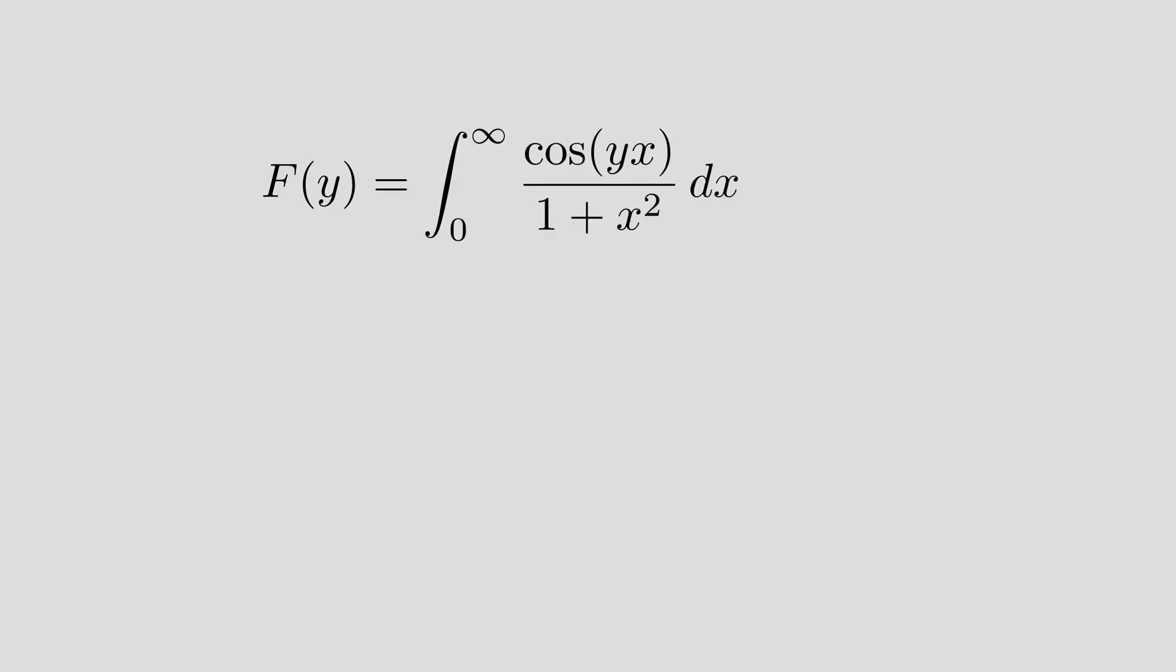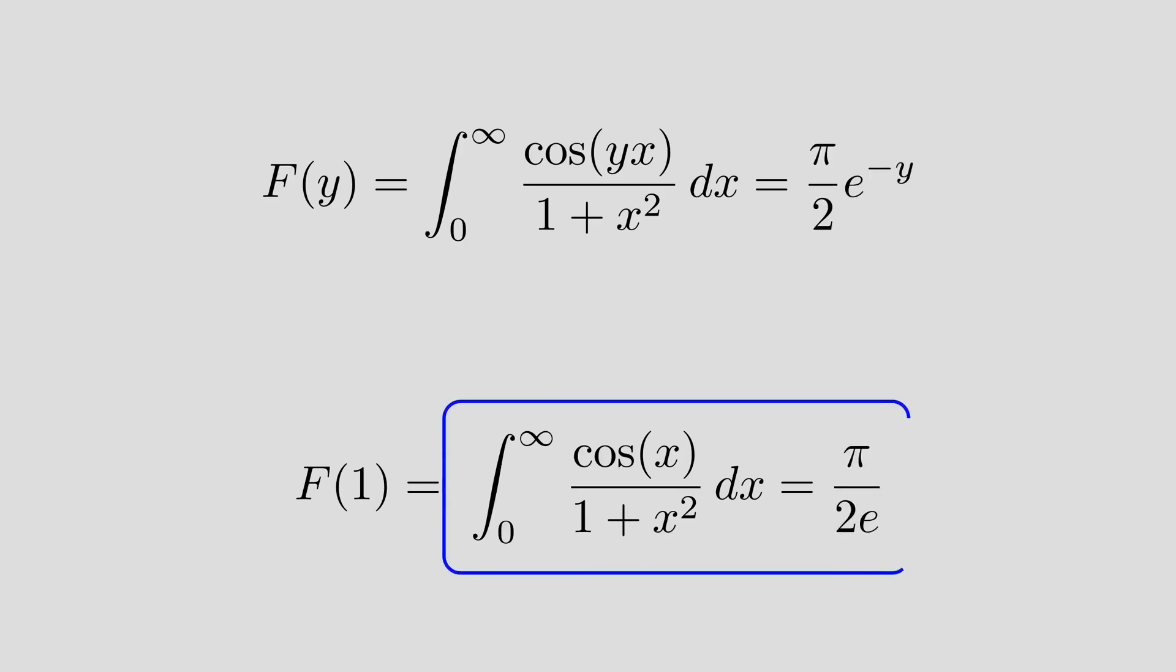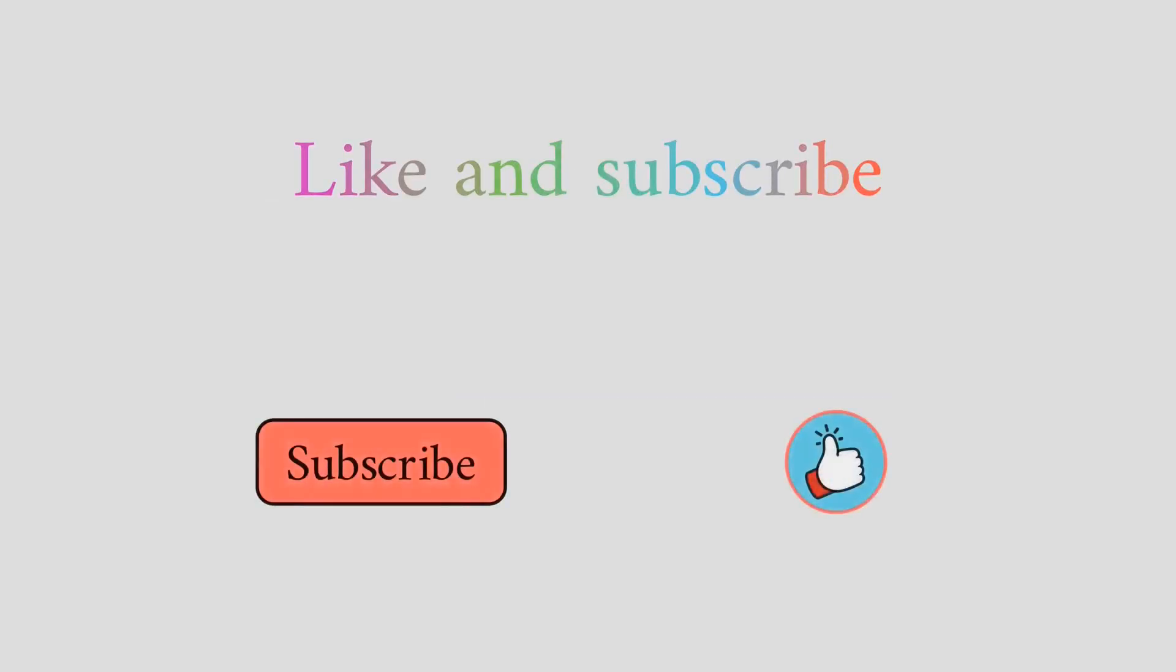Since our function that is defined with an integral is the simple form pi over two exponential minus y, our integral is exactly F of one and this gives us pi over 2e. I hope the presentation was clear. Like, subscribe and comment, and till the next time.